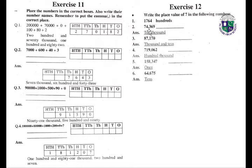Ten thousand seventy — 10,074. Four thousand three hundred and sixty-nine. Ten thousand eighty-seven thousand one hundred and seventy thousand and ten — 170,010. Seventy-one thousand nine hundred and sixty-two — 71,962. Two hundred thousand one thousand and fifty-eight hundred. Fifteen thousand eight hundred and forty-seven — 15,847. Sixty-four thousand six hundred and seventy-five — 64,675.